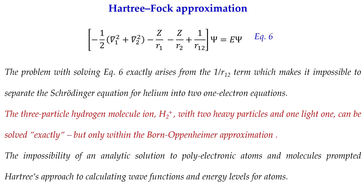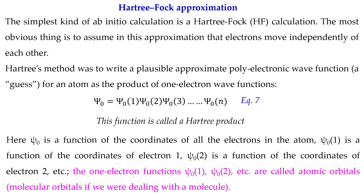We are going to take another approximation developed by Hartree and Fock. This is the simplest kind of ab initio calculation. The most obvious assumption is that electrons move independently of each other — they are not interacting. Hartree's method was to write a plausible approximate polyelectronic wave function — a guess wave function, not the exact one — as the product of one-electron wave functions. So psi_0 = psi_0(1) · psi_0(2) · psi_0(3) · … · psi_0(N), where psi_0 is the total wave function and psi_0(1) is the wave function for electron one.